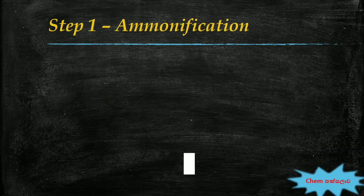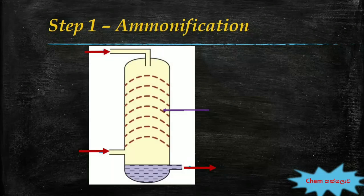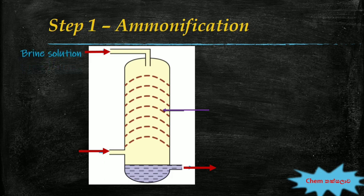There are four major steps in the Solvay process. The first step is ammonification. For this step, a tower called the ammonification tower is used. Through this diagram, you can get a simple idea about the ammonification tower. Brine solution is introduced from the top of the tower and ammonia gas is introduced from the bottom.